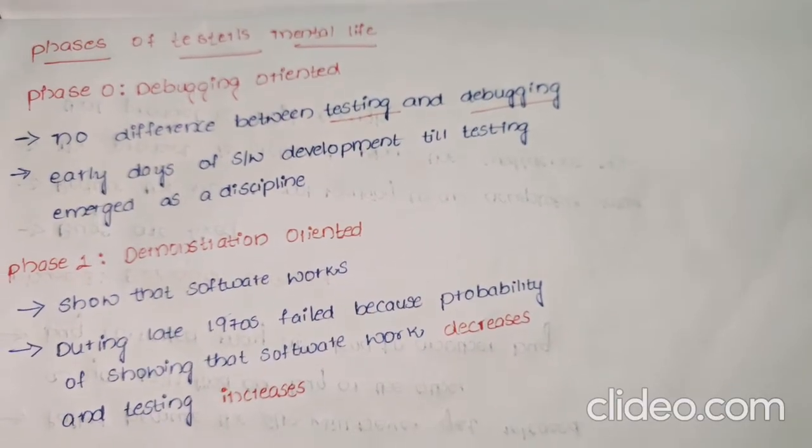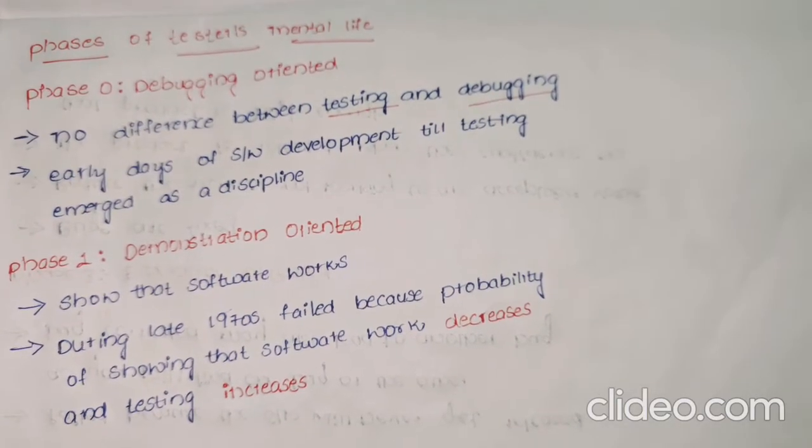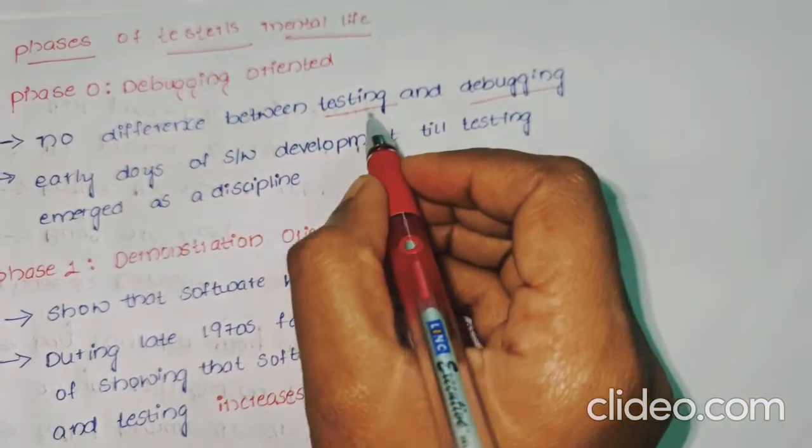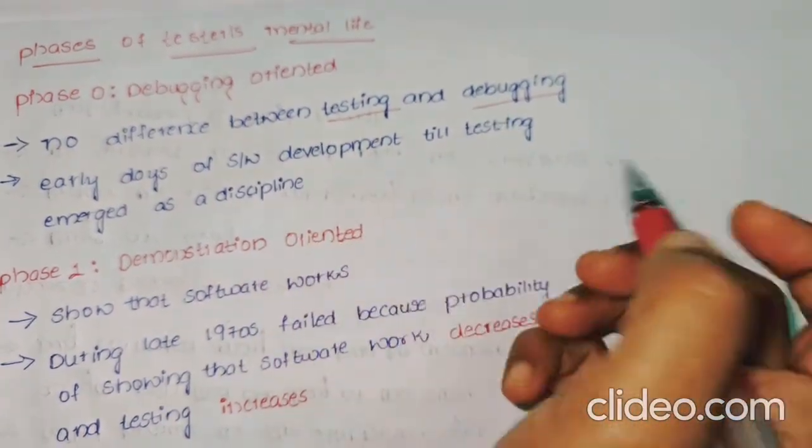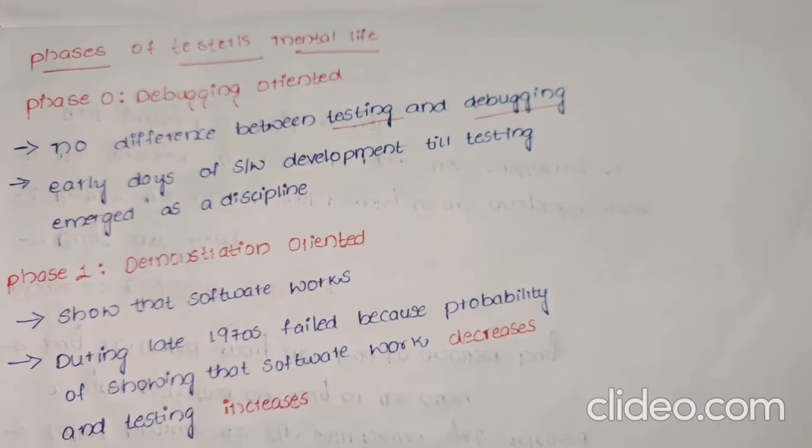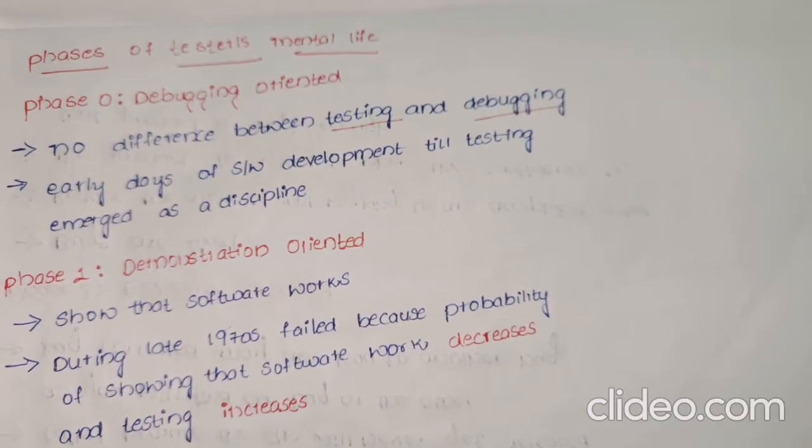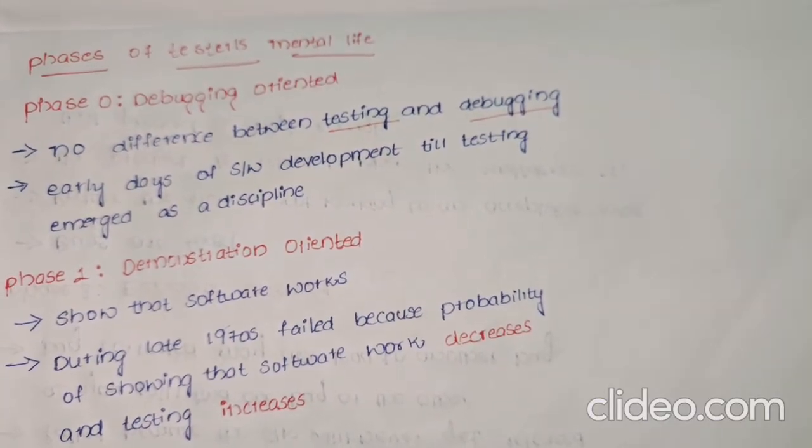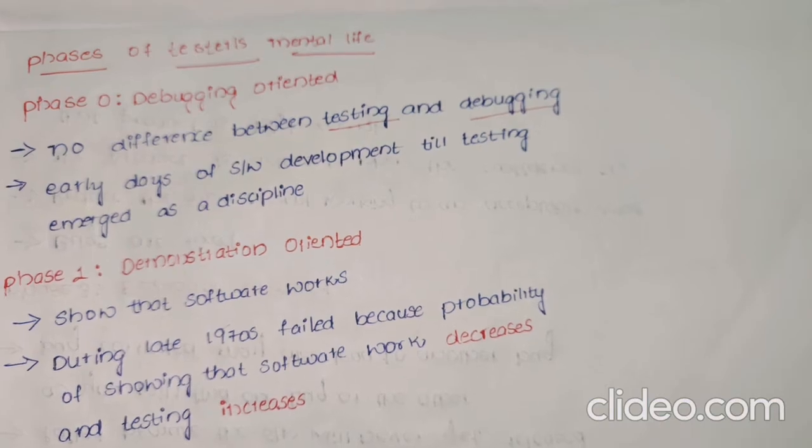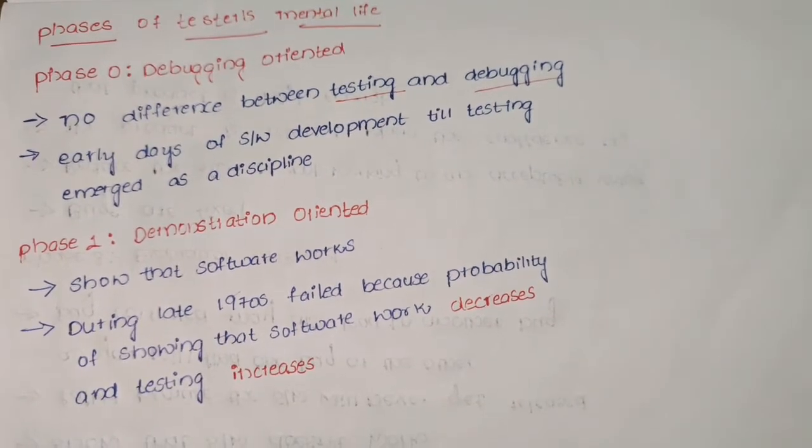Coming to Phase 0 debugging oriented, there is no difference between testing and debugging. They both are similar in nature. Debugging is the process of finding and fixing errors or bugs in any software code.